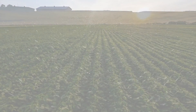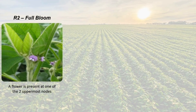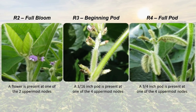The R2 growth stage starts when there's a flower present at one of the two uppermost nodes. The R3 growth stage, or beginning pod, is when there's a 3/16-inch pod at one of the four uppermost nodes. And finally, the R4 growth stage is when there's a 3/4-inch pod at one of the four uppermost nodes.